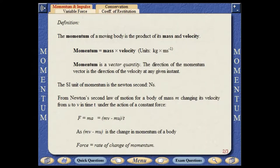The momentum of a moving body is the product of its mass and velocity. Momentum is a vector quantity. The direction of the momentum vector is the direction of the velocity at any given instant. The SI unit of momentum is the Newton second.